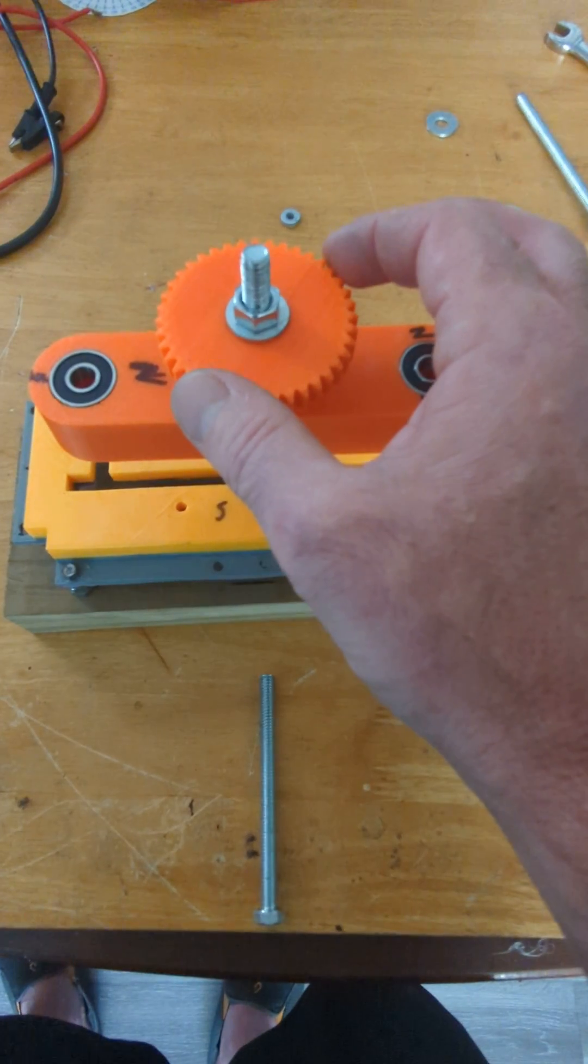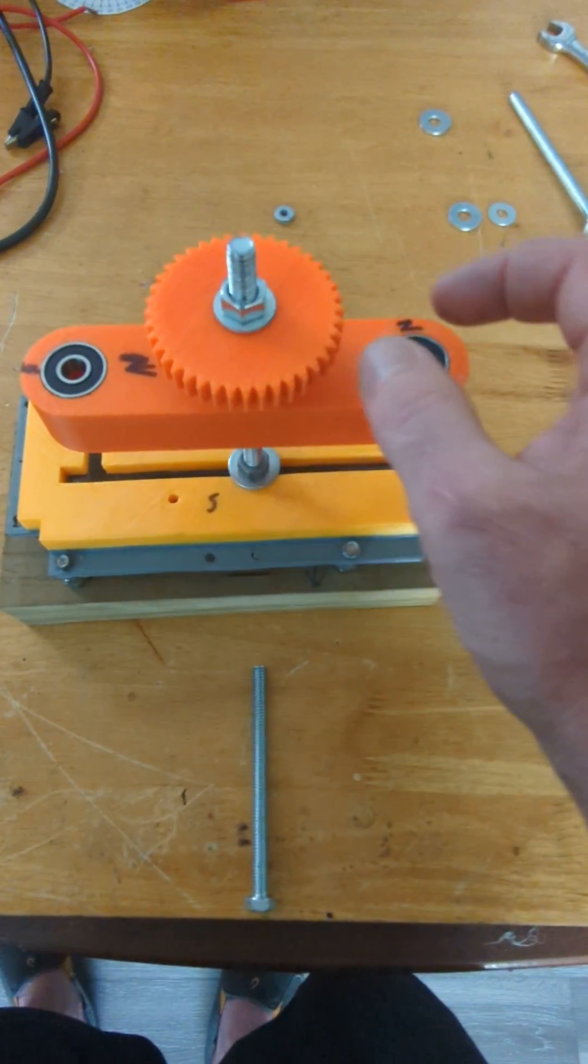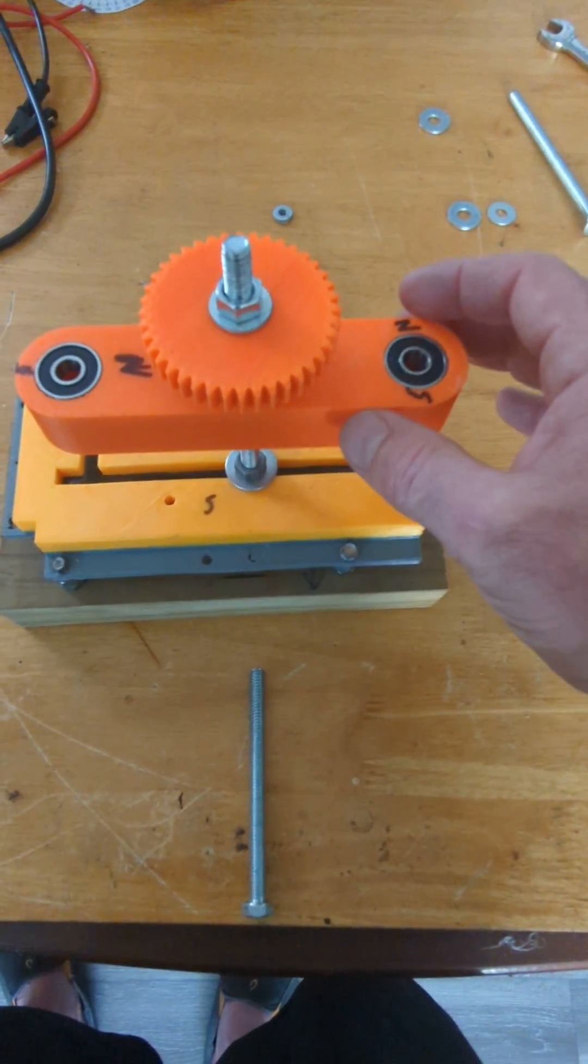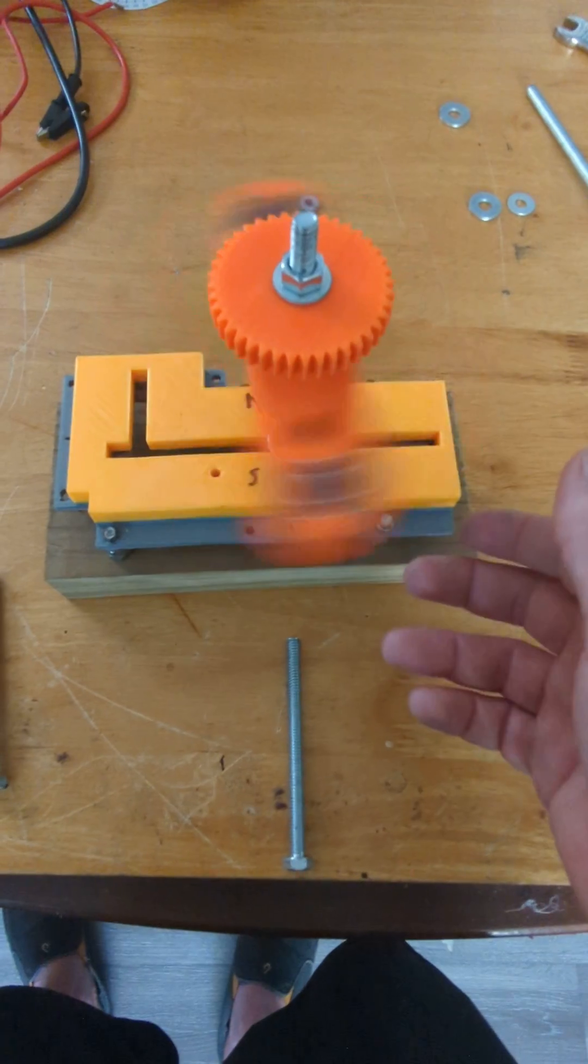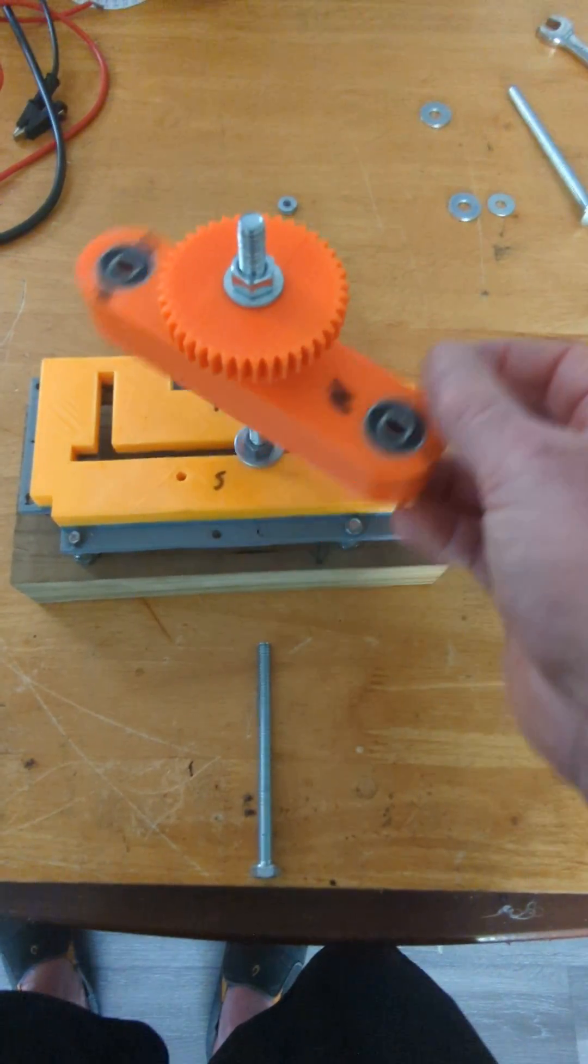I could also adjust the gear ratio, make this one smaller with less teeth, make these ones bigger with more teeth, and have a two-to-one or one and a half or whatever ratio I want, to see what kind of interaction we have.